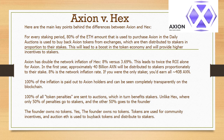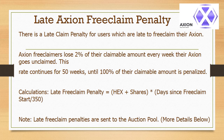The founder owns no tokens. Tokens are used for community incentives, and auction ETH is used to buy back tokens and distribute to stakers. There is a late claim penalty for users who are late to free claim their Axion. Axion free claimers lose 2% of their claimable amount every week their Axion goes unclaimed. This rate continues for 50 weeks, until 100% of their claimable amount is penalized.